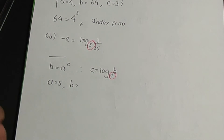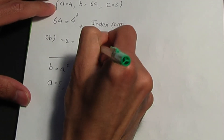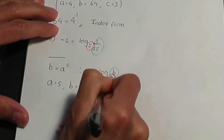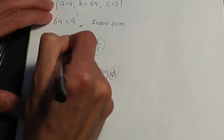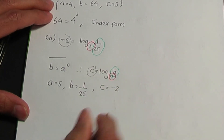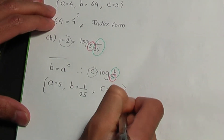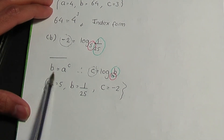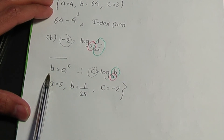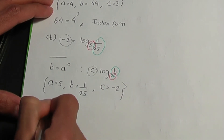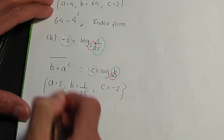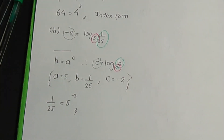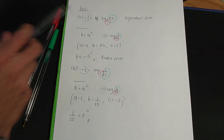How about b? Taking a green pen: b, by comparison, is one over 25. And how about c? c in this case is minus two. Now that I know what a, b and c are, let me substitute them into the relation which corresponds to the index form. b in this case is one over 25 — that is equal to a, which is five, to the power of c, which is minus two. That completes part b of example two.